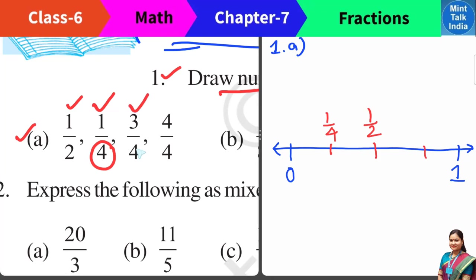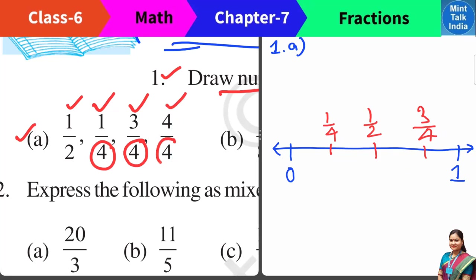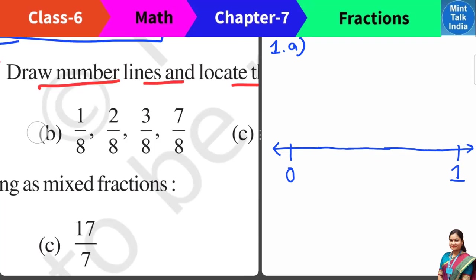3 by 4 means out of 4 total equal parts, only 3 parts. This is 1 part, 2 part, 3 part — that entire distance is the position of 3 by 4. And the last one is 4 by 4, which means out of total 4 equal parts, all 4 parts — or 1 whole. So the place of the number 1 is the place of 4 by 4.